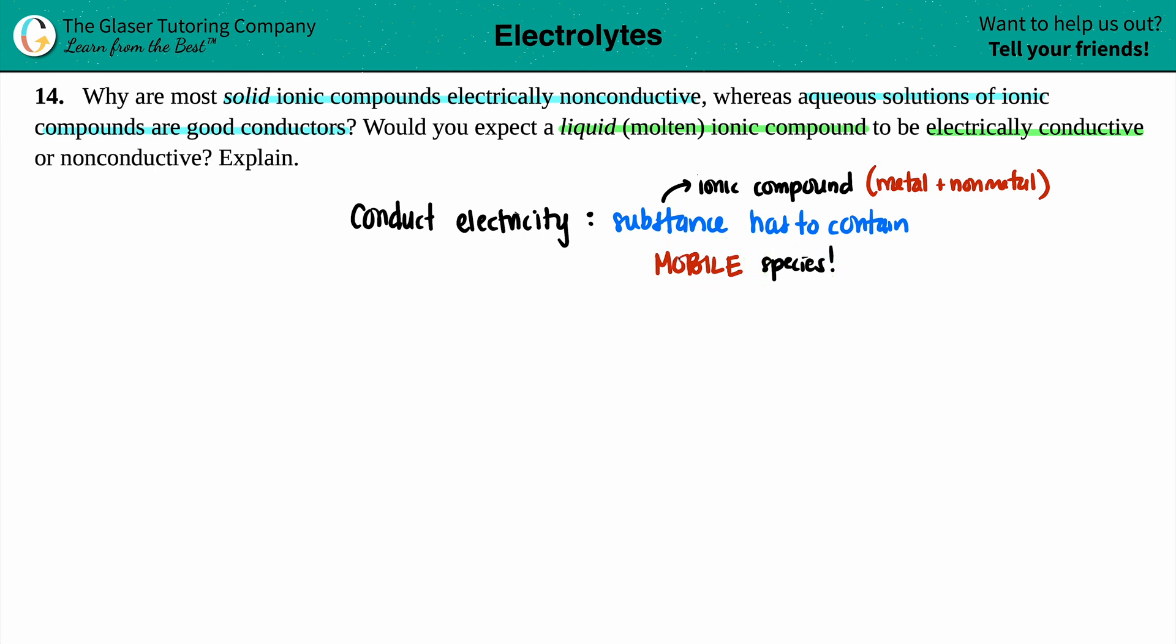So this ionic compound, this substance has to contain mobile species. Now mobile, we can use it in the general term. If something's mobile, they can move around. So move around, freely moving. That is the definition of being mobile. And in this case, in chemistry, these ionic compounds have to have freely floating, moving around species. And in this case, the species are going to be the electrons because that's where the charges come in.